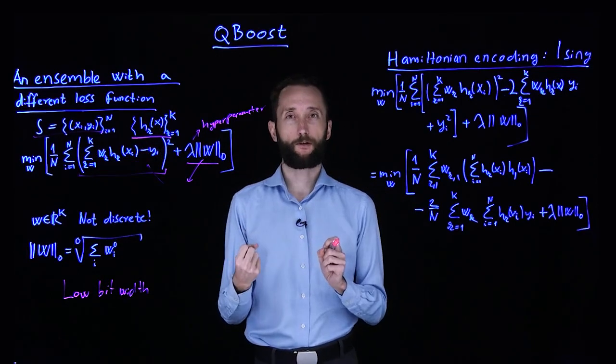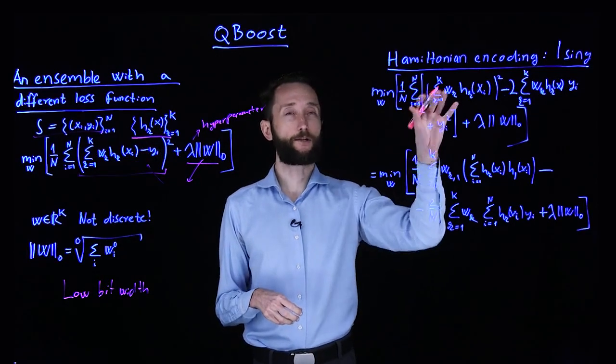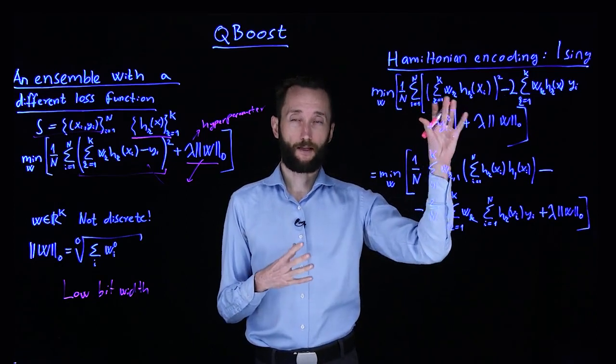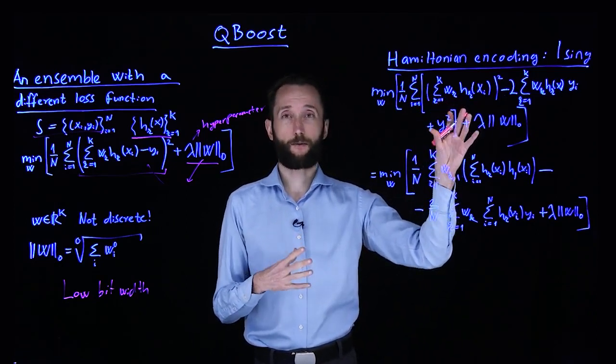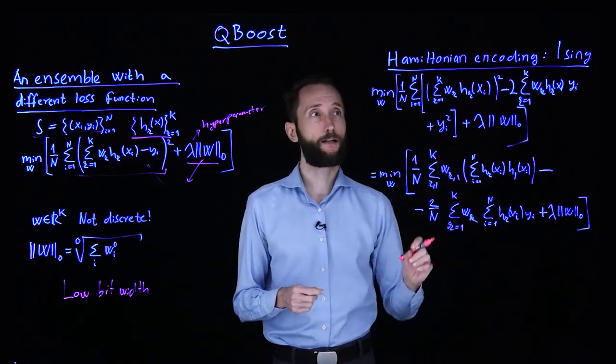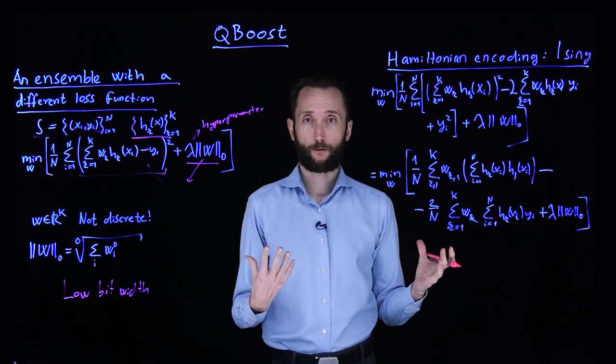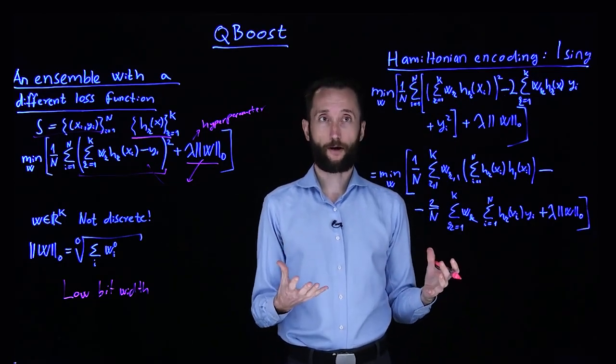Now we have to transform it a little bit and use our Hamiltonian encoding, namely one of the two kinds of Hamiltonian encodings, the Ising encoding, and then we can solve it with a quantum annealer or by using QAOA.